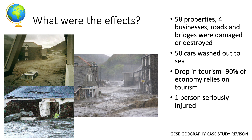There were significant economic effects from the Boscastle flood. 58 properties, 4 businesses, roads and bridges were damaged or destroyed. Due to the car park flooding, 50 cars were washed out to sea, leading to some environmental pollution in the surrounding area. After the floods, the number of tourists dropped significantly. The village is a very popular tourist destination and 90% of the local economy relies on tourism.